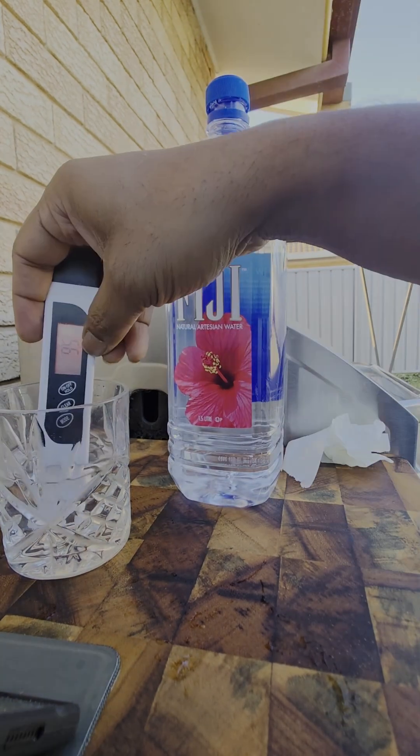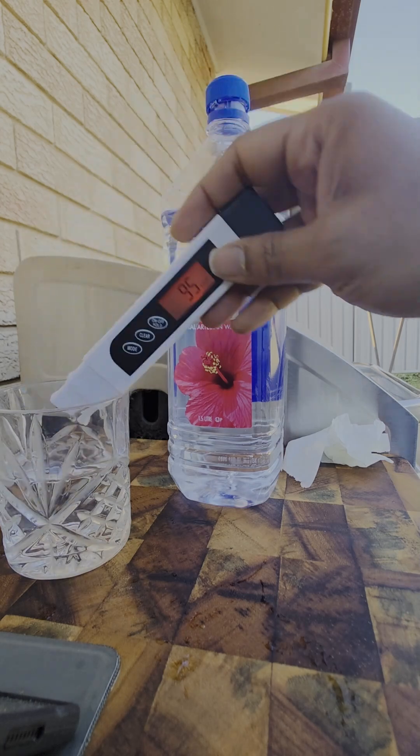Let's check with Fiji water. This has 95 ppm, well within the range.